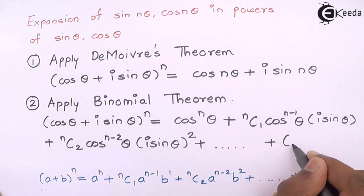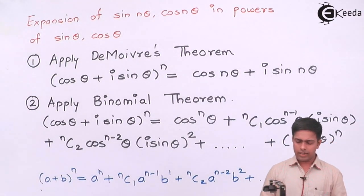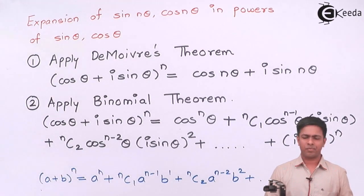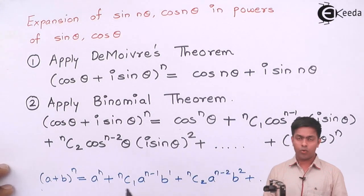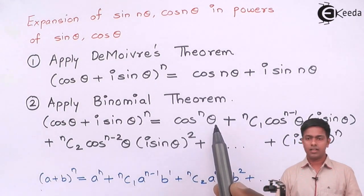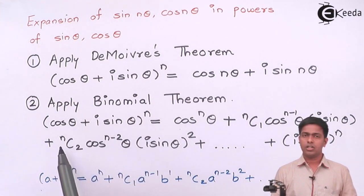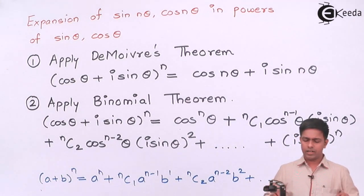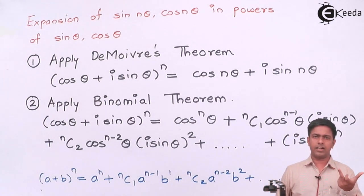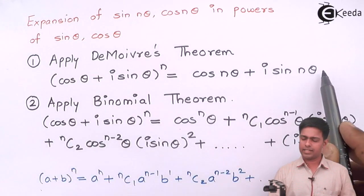In the end we will get (i·sin θ)^n as the last term. After this we separate the real and imaginary terms from the Binomial expansion. cos^n(θ) is real; terms where i^2 = −1 are also real. So we collect all real terms together and all imaginary terms together, giving a right-hand side of the form: (real part) + i·(imaginary part).